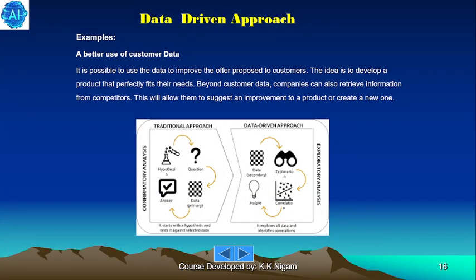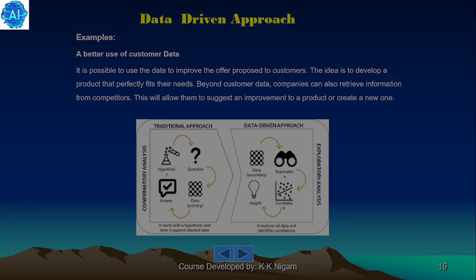Examples: a better use of customer data. It is possible to use data to improve the offer proposed to customers — the idea is to develop a product that perfectly fits their needs. Beyond customer data, companies can also retrieve information from competitors, which will allow them to suggest an improvement to a product or create a new one.